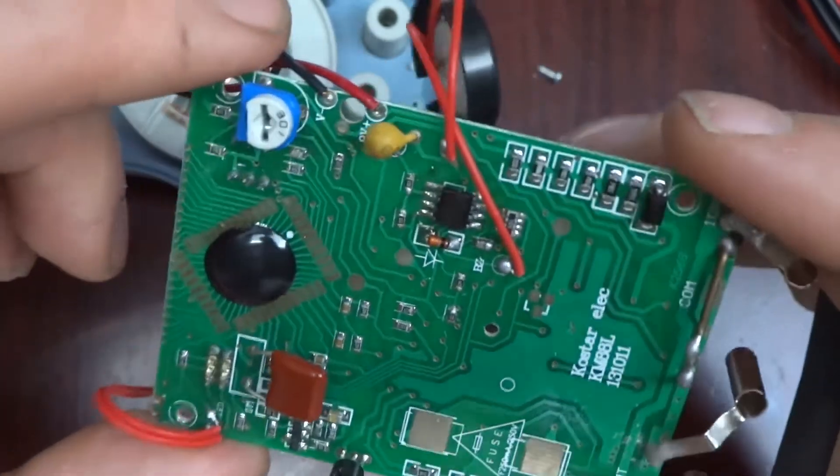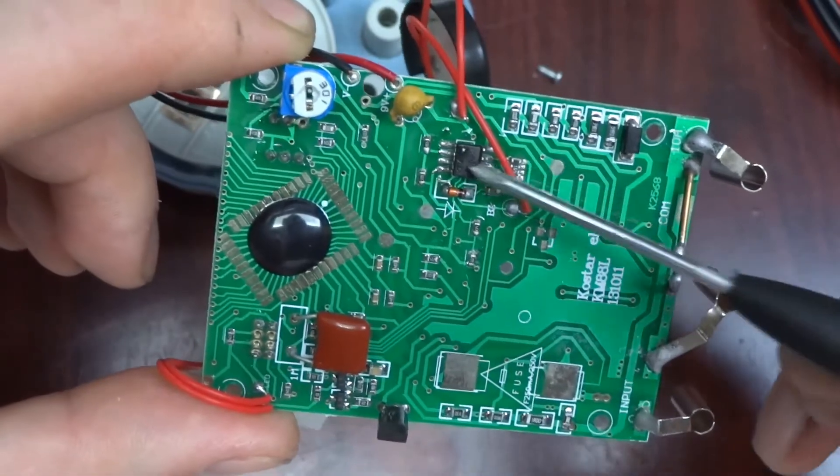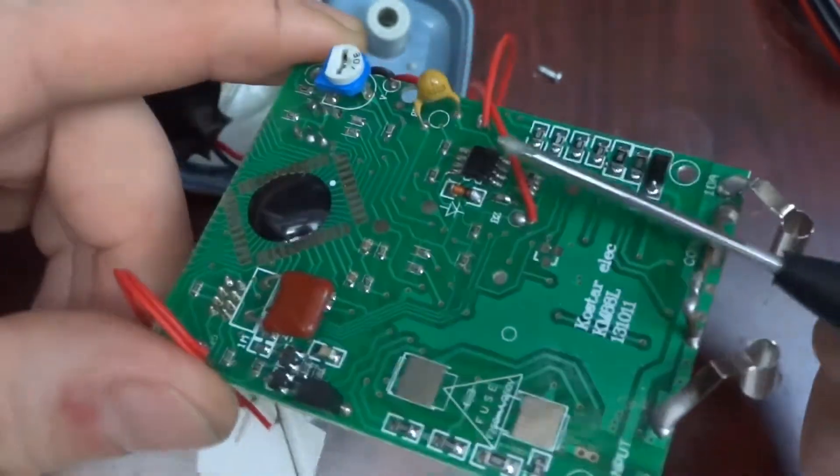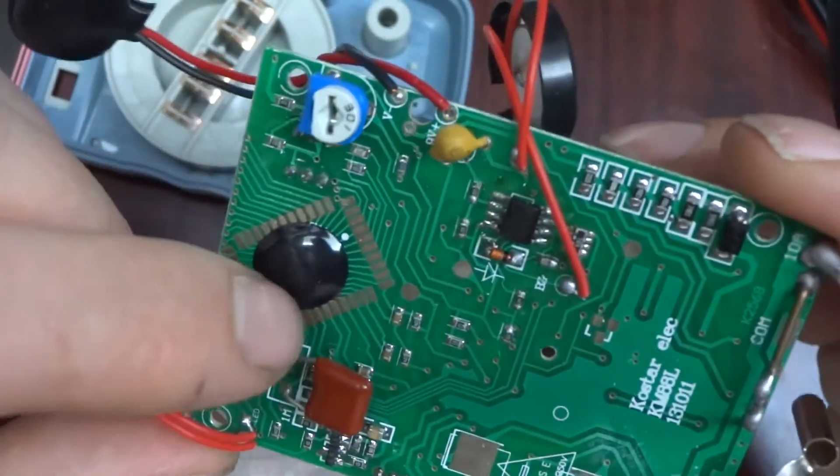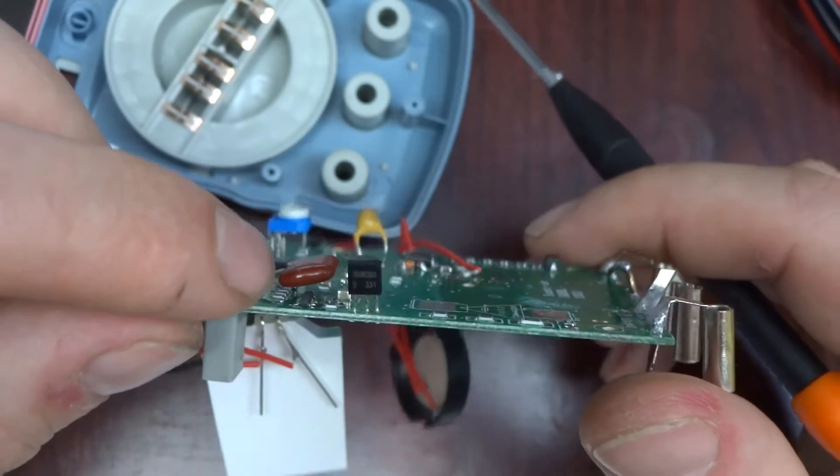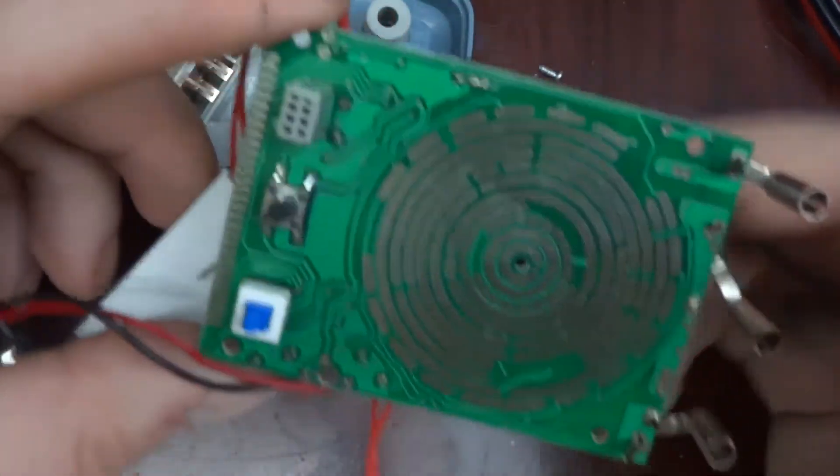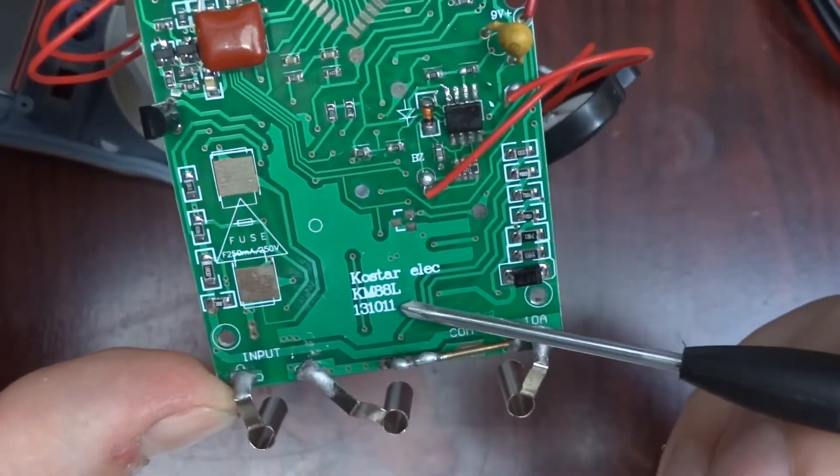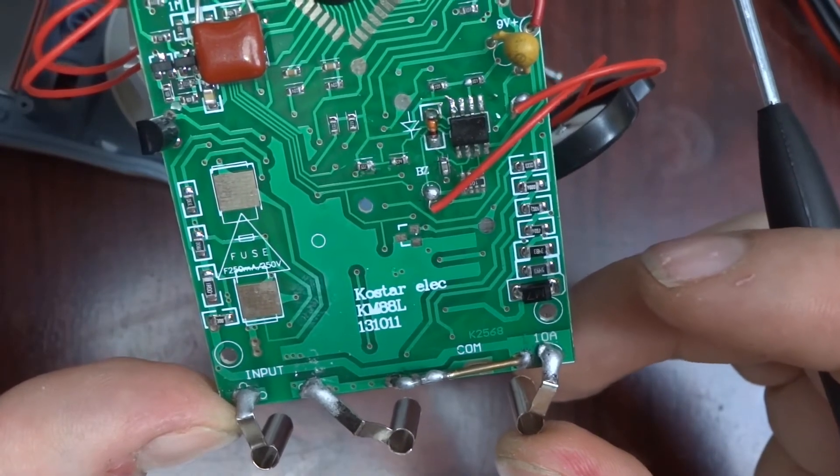What else is on here? Just a splodged chip, nameless chip, a diode, a couple of resistors, a pot for some reason, a couple of transistors, and two switches. Kestar Elec KM-8-8-L-13-11-01-1.